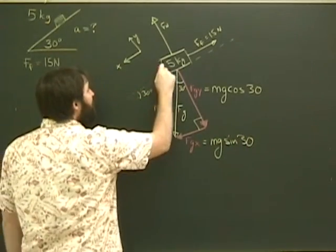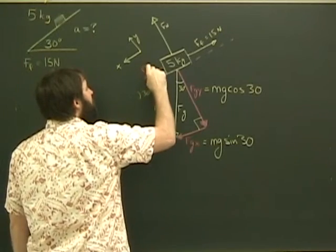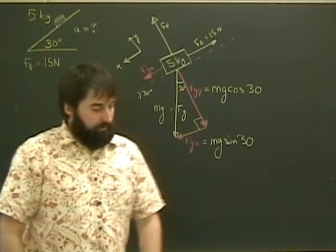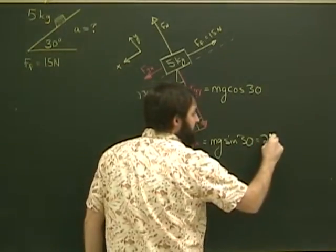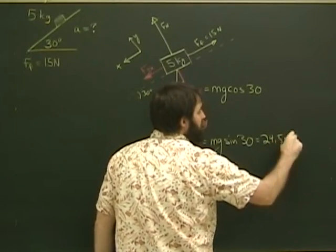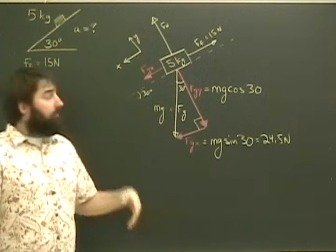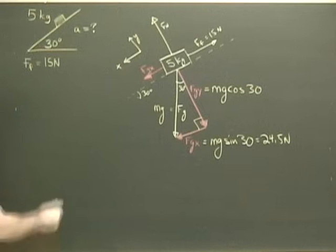I'm going to go ahead and draw Fgx up on my free-body diagram just so I don't forget about it. Fgx works out to be 24.5 Newtons. Now I've got my free-body diagram. I've broken everything into x and y components. I can apply Newton's second law.